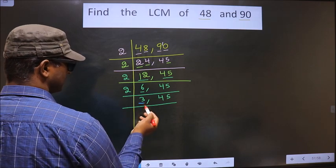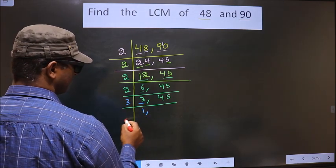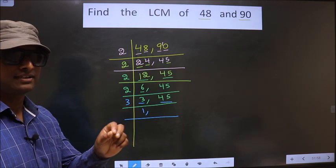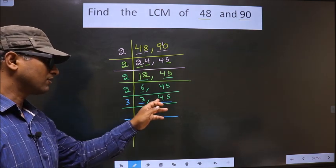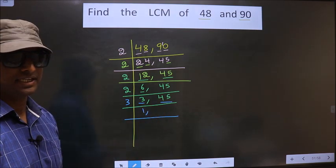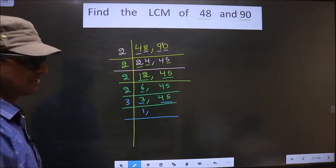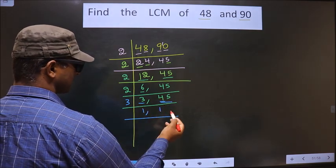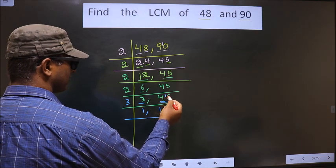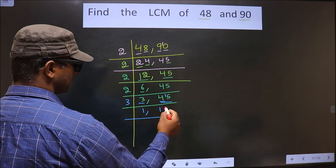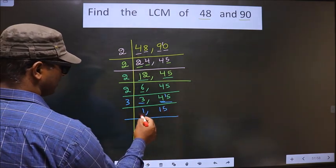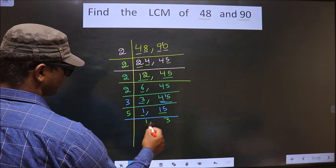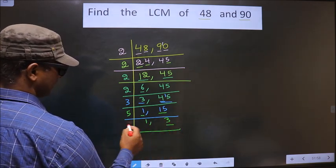Here we have 3. 3 is a prime number, so we take 3 once — 3 times 1 is 3. Now, to check whether this number is divisible by 3 or not, we add the digits: 4 plus 5 is 9. Is 9 divisible by 3? Yes. So this number is also divisible by 3. The first number is 4 — a number close to 4 in the 3 table is 3 times 1 is 3. 4 minus 3 is 1, carried forward making it 15. When do we get 15 in the 3 table? 3 times 5 is 15. We got 1 here, so we focus on the next number, which is 15. 15 is nothing but 5 times 3 is 15. Now we got 3 — 3 is a prime number, so 3 times 1 is 3.